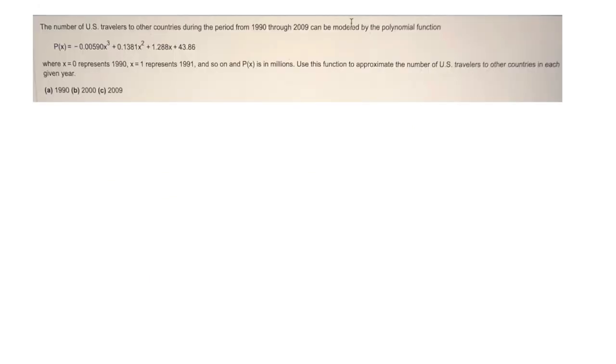Now, this next question, they say, here's a function that talks about U.S. travelers, whatever, where x0 is 1990, if you have 1, that's 1991, et cetera. And then they say, well, how many people traveled in 1990? So if 1990 from here is x equals 0,